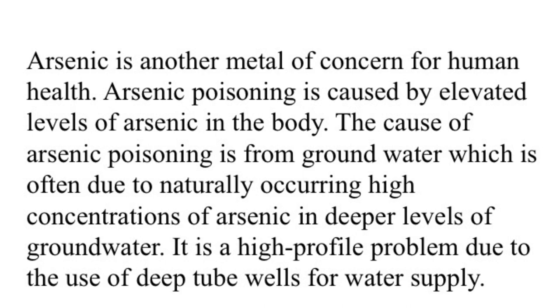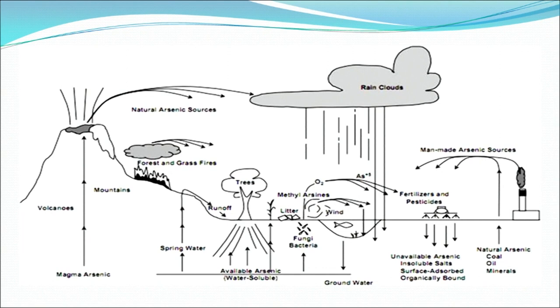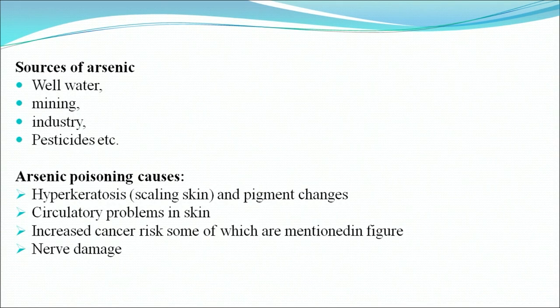Arsenic is another matter of concern for human health. Arsenic poisoning is caused by elevated levels of arsenic in the body. The cause is often from groundwater due to naturally occurring high concentrations of arsenic in deeper levels of groundwater — a high-profile problem due to the use of deep tube wells for water supply. Sources include well water, mining, industry and pesticides. Arsenic poisoning causes hyperkeratosis (scaling skin), pigment changes, circulatory problems, increased cancer risk and nerve damage.